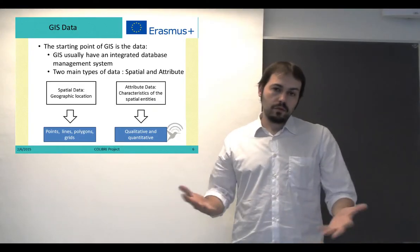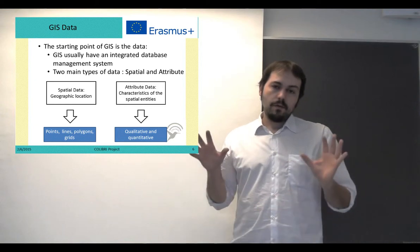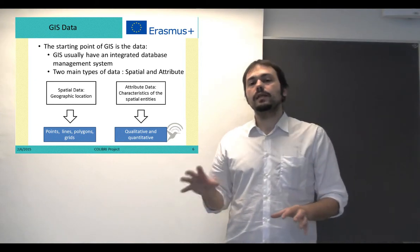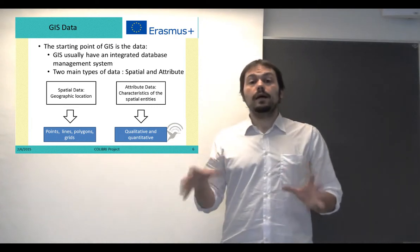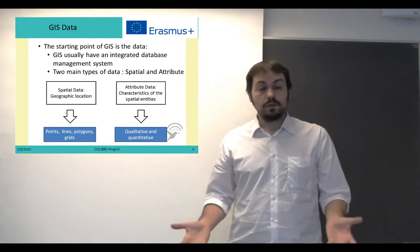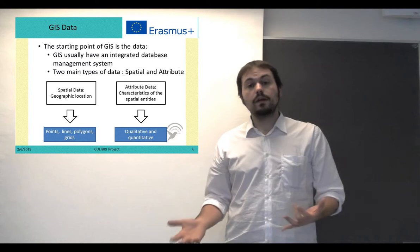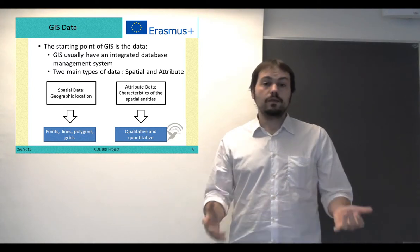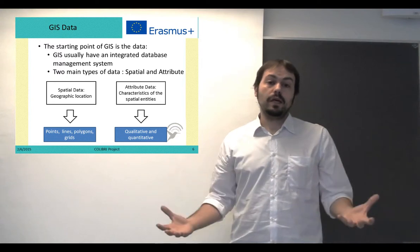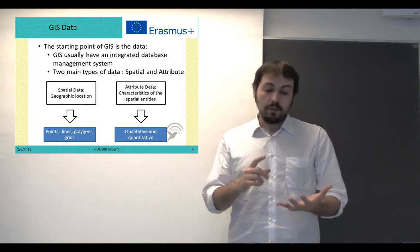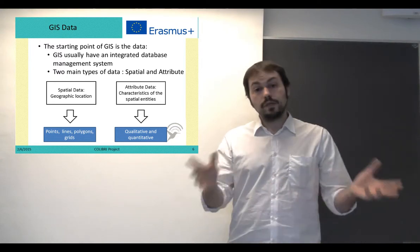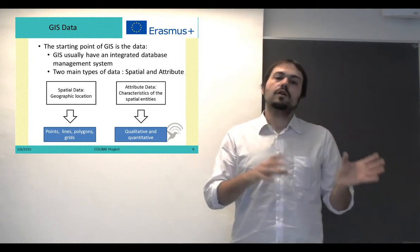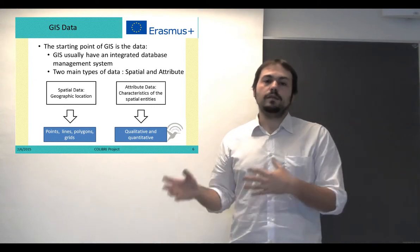In relation to the basics of GIS data, the starting point is that we have it integrated in database management systems, and we have our data stored in tables. We have two types of data: spatial data and attribute data. Spatial data is related to the geographical location of elements — elements that can be points, segments, or regions. Attribute data tells us about the characteristics of each of the spatial elements.